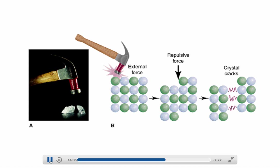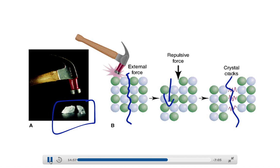Ionic compounds and ionic crystals are strong but brittle. If hit with a hard force, these bonds are so strong and rigid that they can't flex. Hit them hard enough and they break. Pushing on the side creates a repulsive force and cracks in the structure. A rigid lattice may be very strong, but it has no flexibility — so an applied force will crack the bonds rather than bend them, as we might see in a metal.